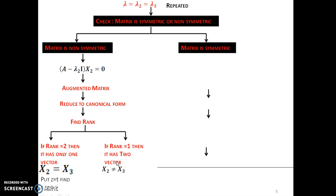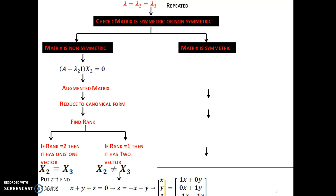How to find the single eigenvector? Put Z as T and find X and Y, or vice versa. But if X2 is not equal to X3, that means we will have three different eigenvectors. If in X2 you put Z as T, for X3 you have to alternate the substitution — put X equal to T or Y equal to T and so on. They are linearly dependent, meaning we have two different eigenvectors in this case. But in this case we will have only one eigenvector.